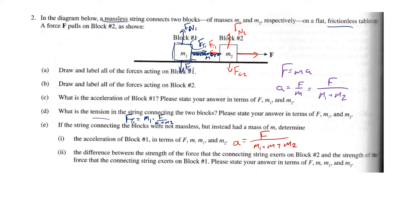Now find the difference between the strength of the force the connecting string exerts on block two and the force it exerts on block one. Let's figure out each tension. For block one: ft1 equals m1 times acceleration.